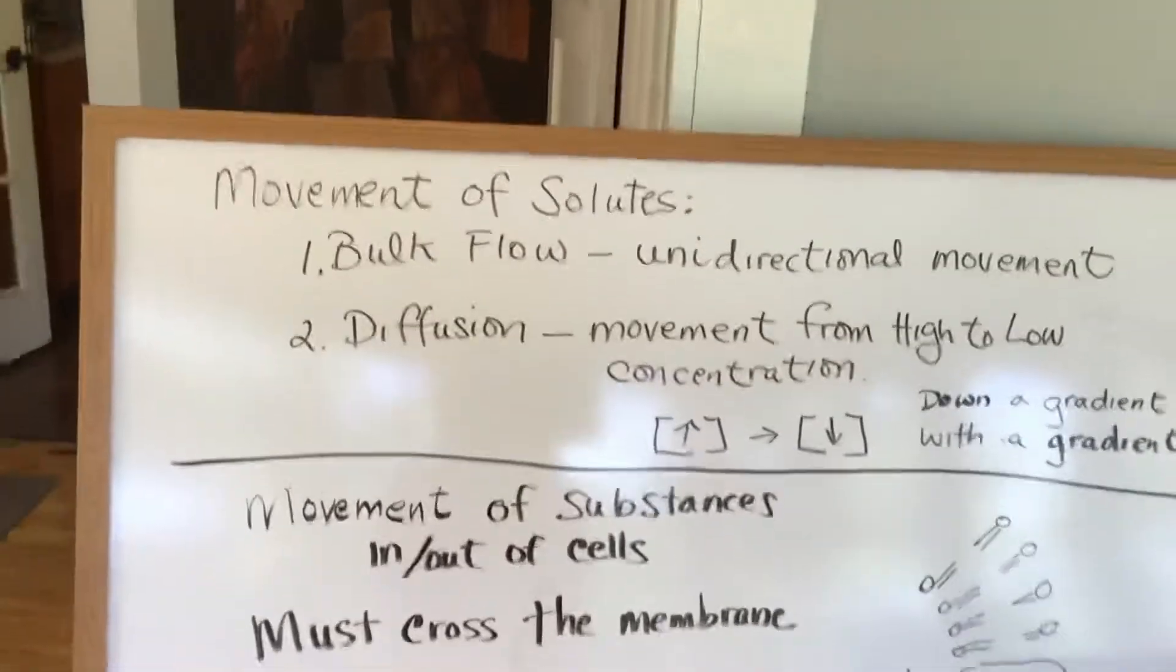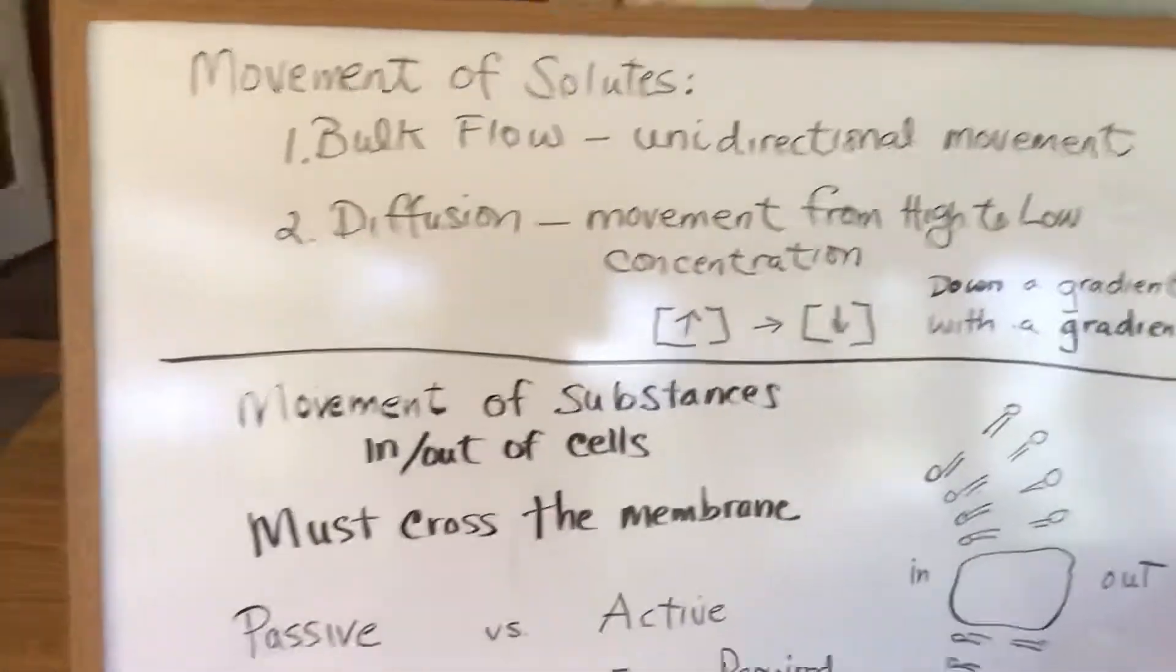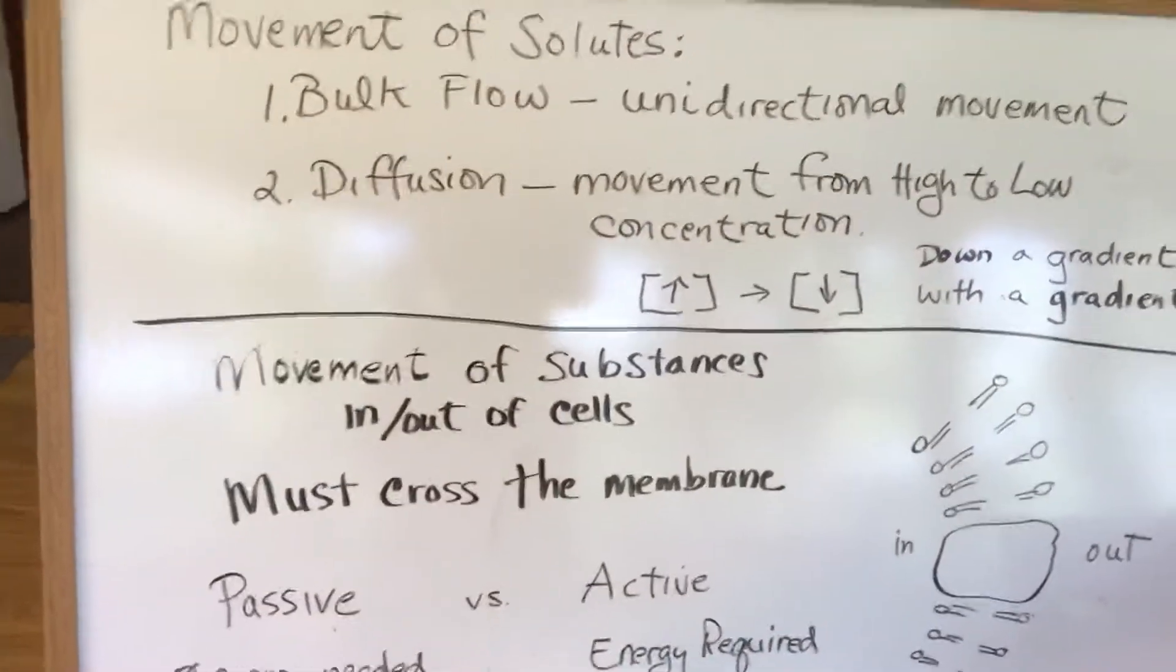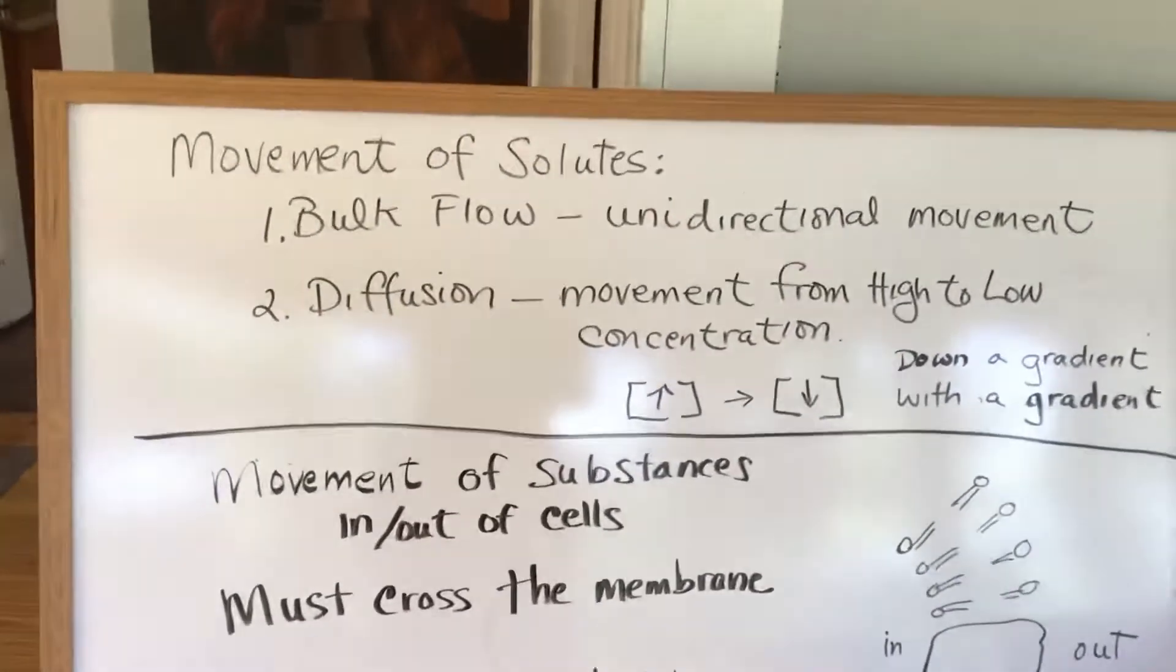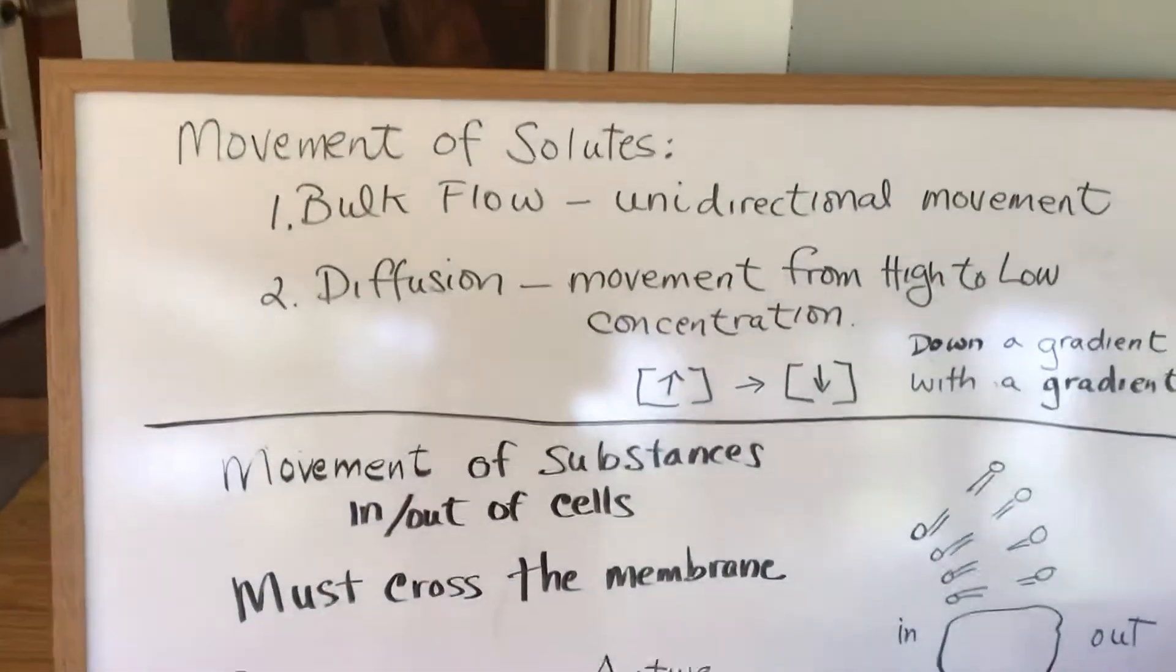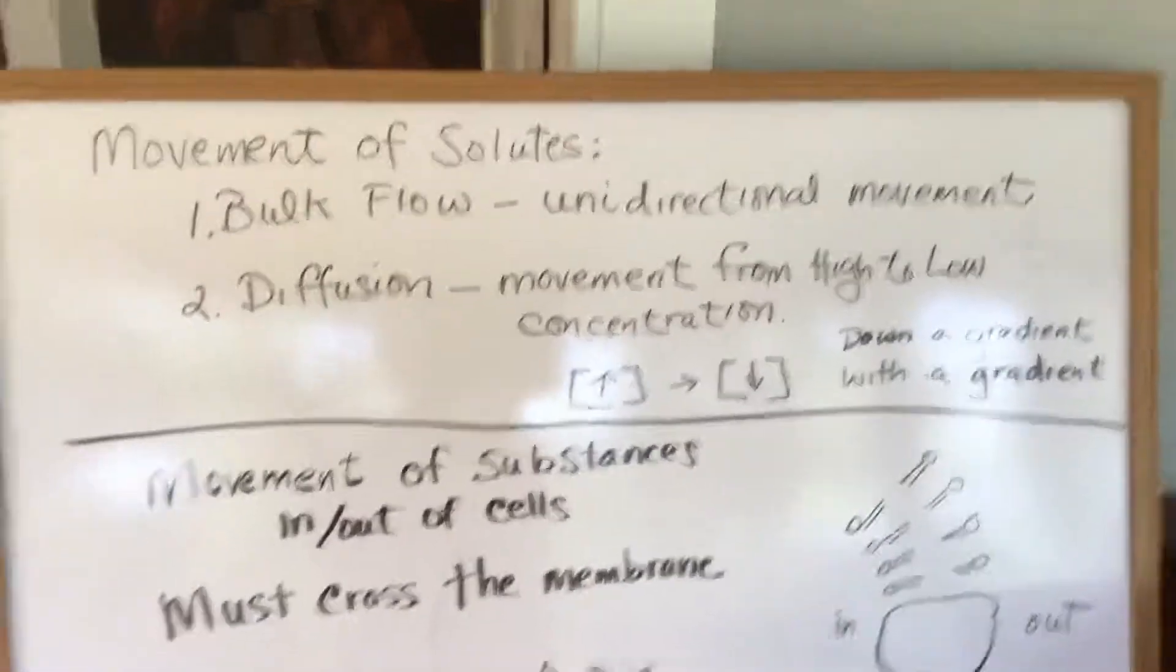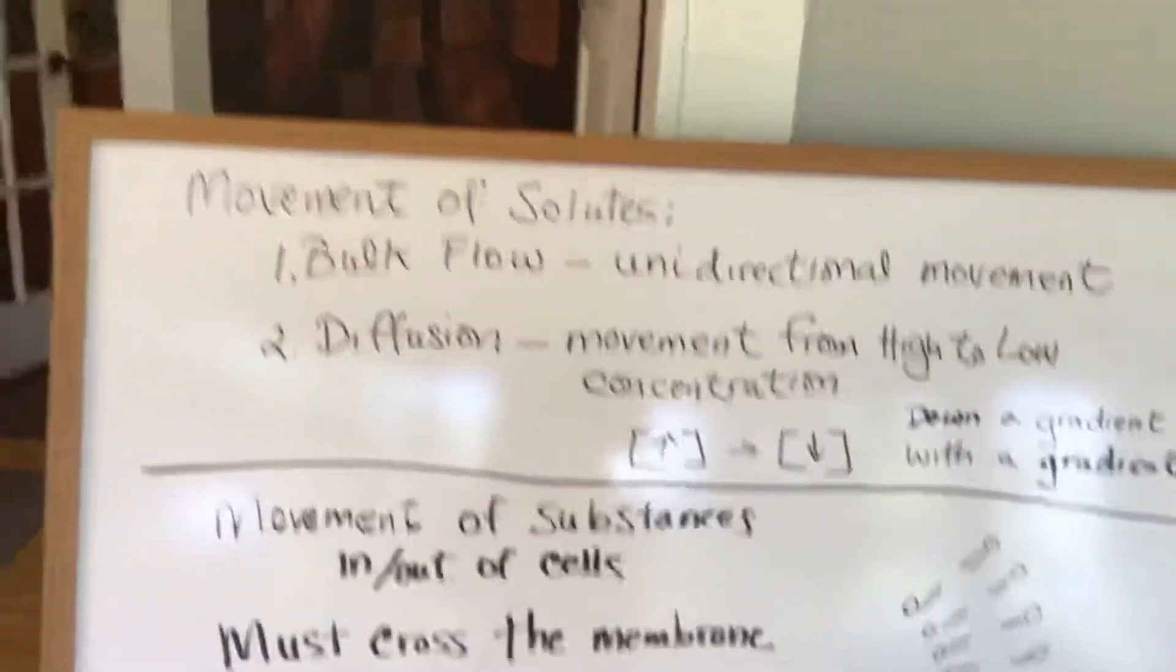So in essence, what diffusion is, is the molecules that you have in concentration will bump into each other because of the actual movement of the molecules or kinetic energy of any substance. That bumping will eventually spread them out, so there's the least amount of bumping in the space provided.